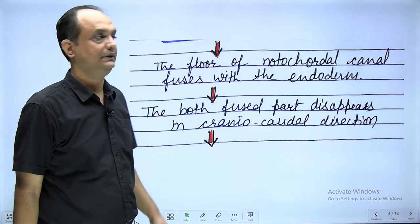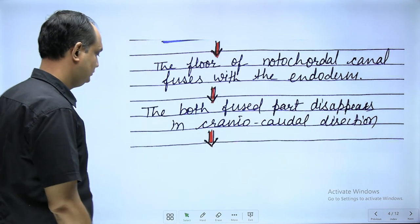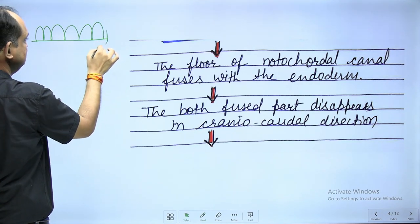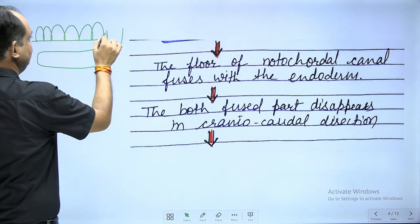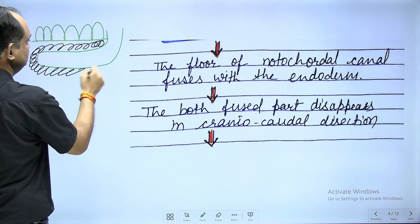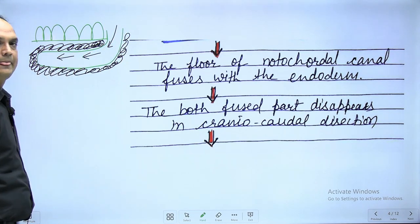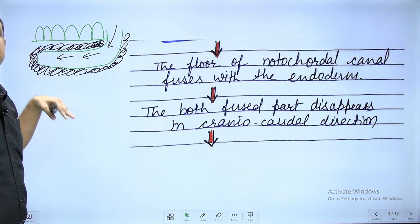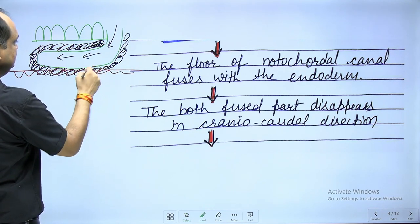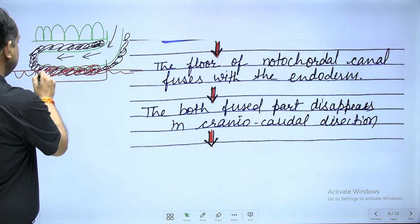In the next step, the floor of the notochordal canal fuses with the underlying endoderm, and later both these layers disappear. The notochordal process cells surround the canal in the center, and below the epiblast lies the endoderm (hypoblast). The floor of the canal and the endoderm cell layer merge, and once they disappear, the roof of the notochordal canal persists.